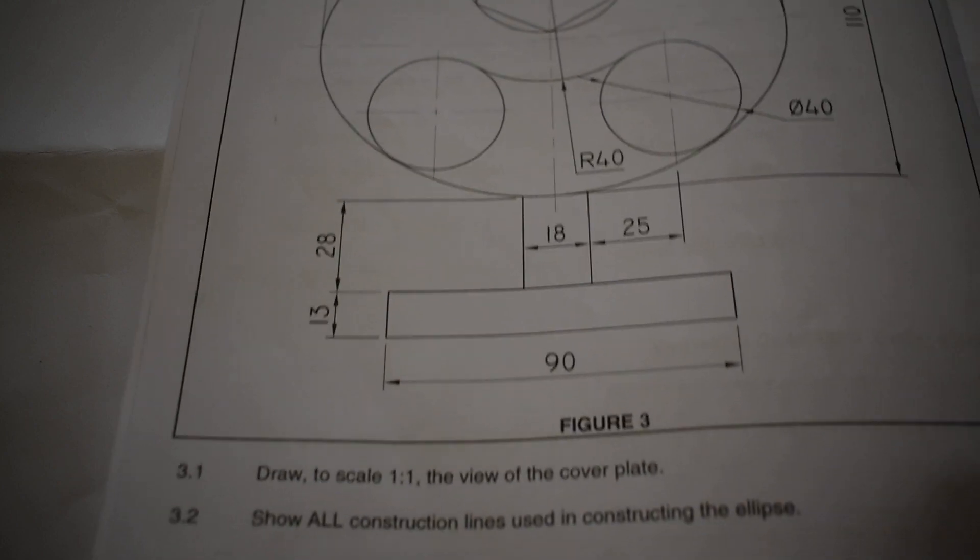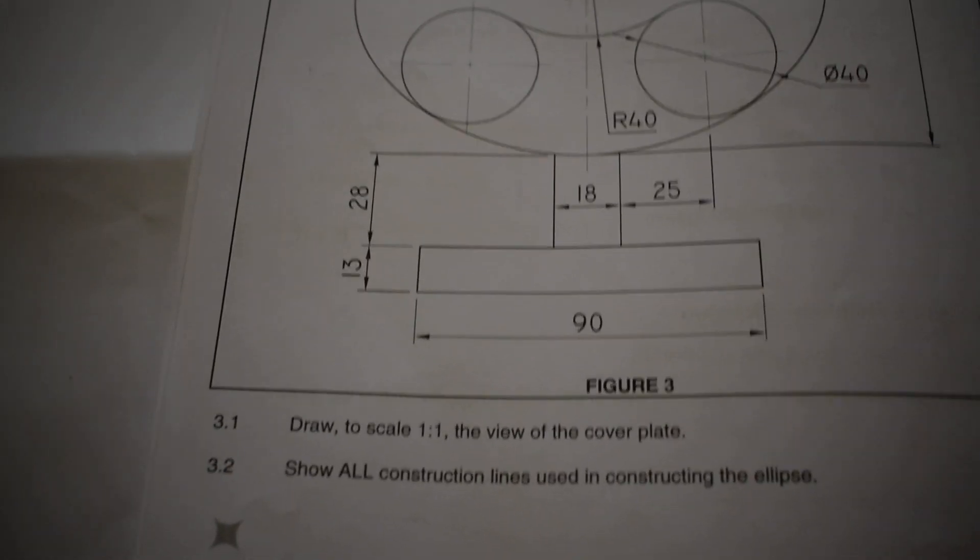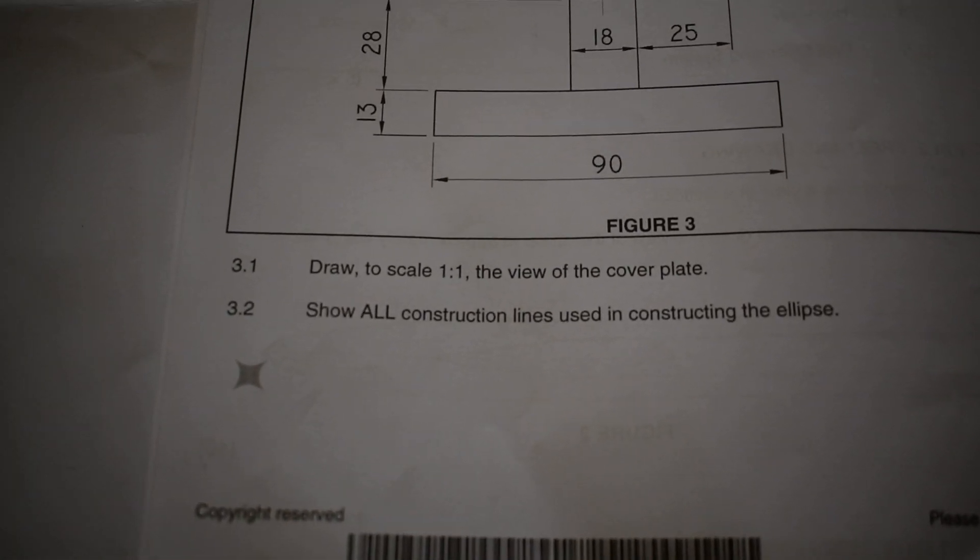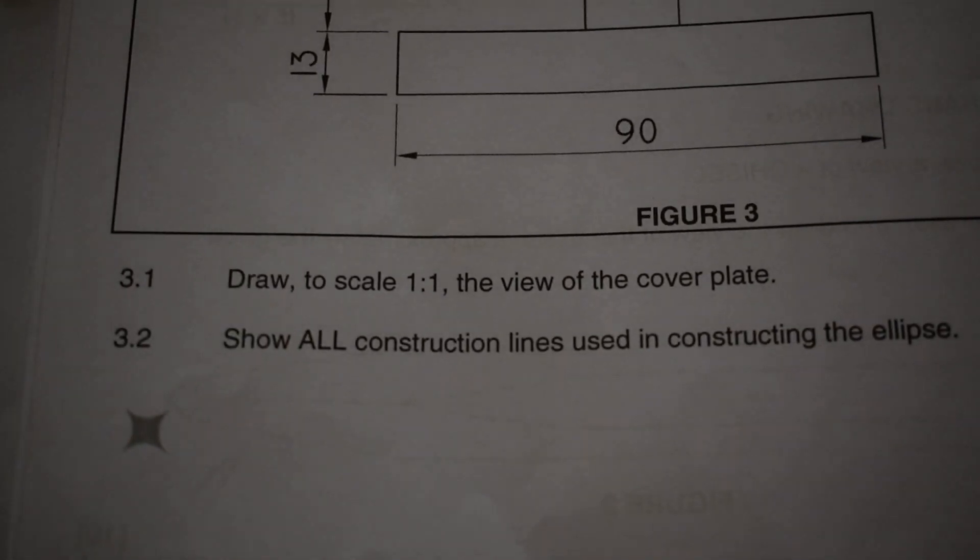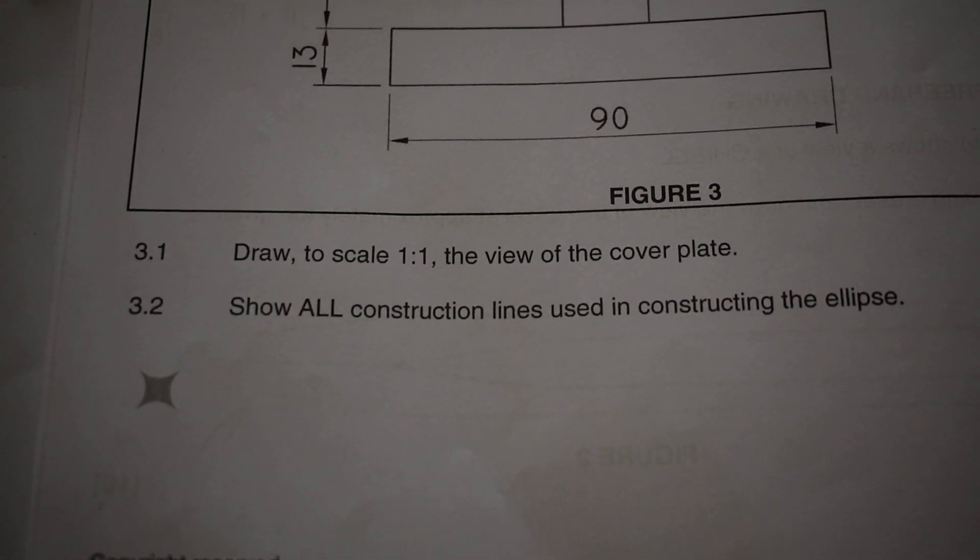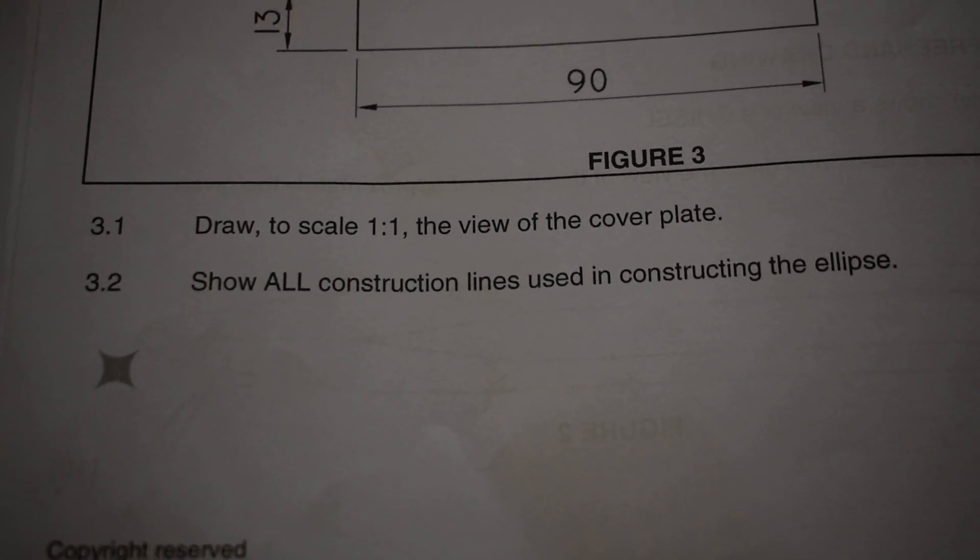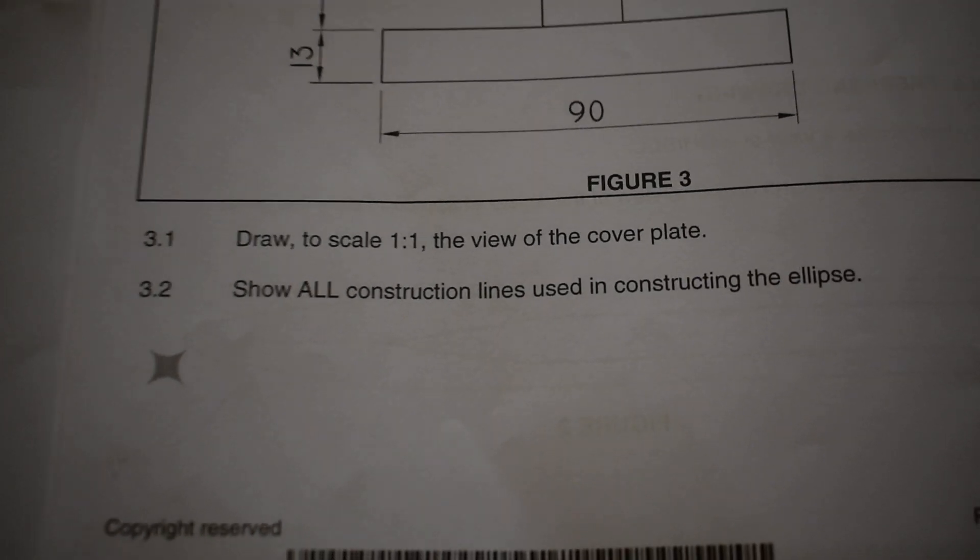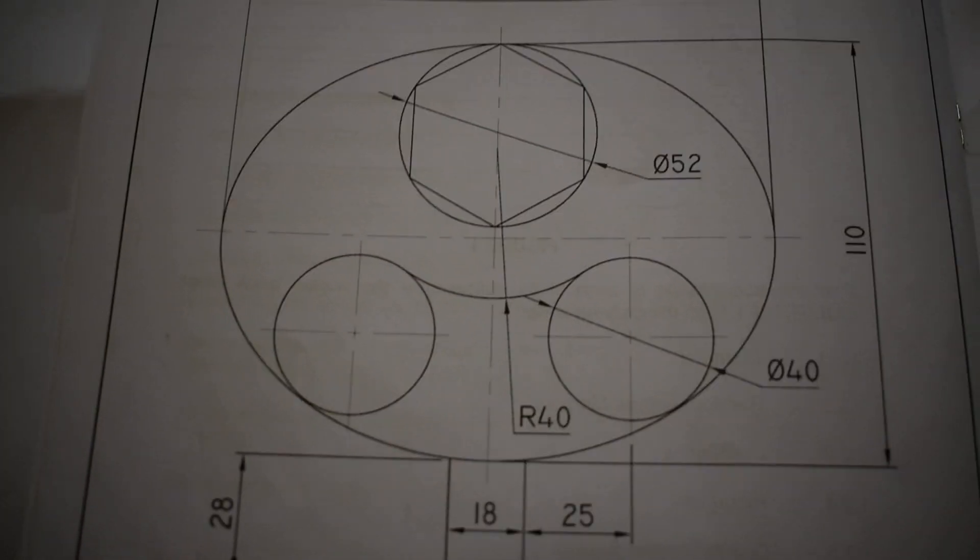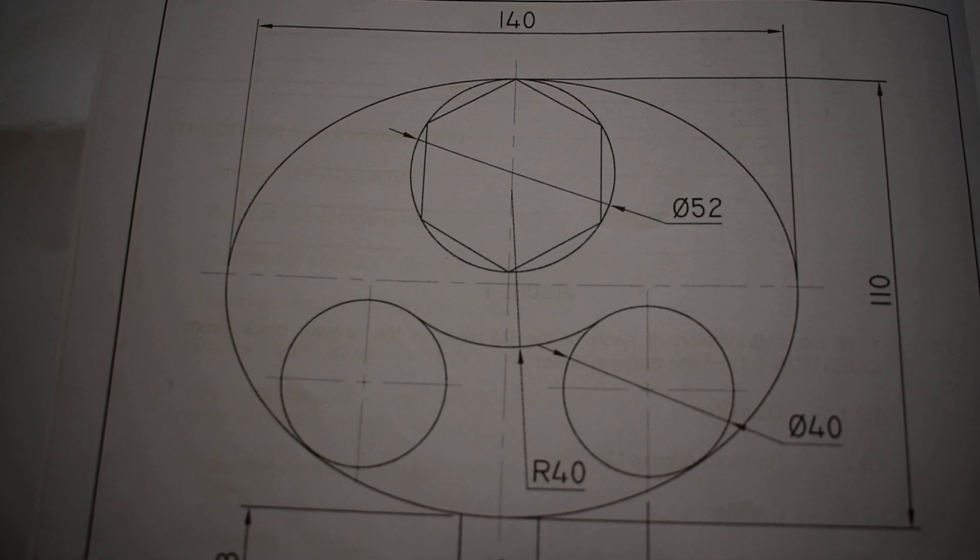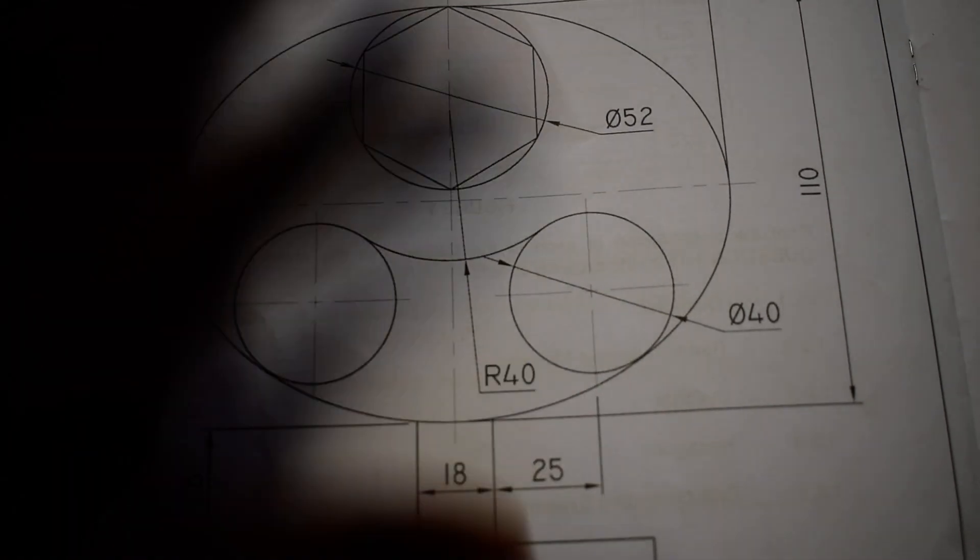The question says draw to a scale one is to one, a view of this cover. And then 3.2, show all the construction lines used to construct the ellipse. You understand, we are having an ellipse there. I saw people drawing a cycle - this one is not a cycle guys, it's an ellipse. So you are going to draw it using four-center method at a scale one is to one. So let's start. You'd be advisable to start with the ellipse using scale one is to one.